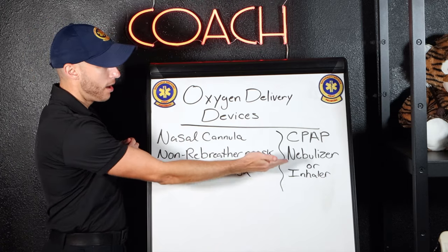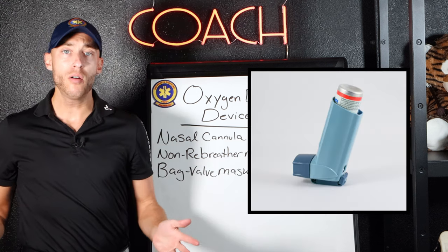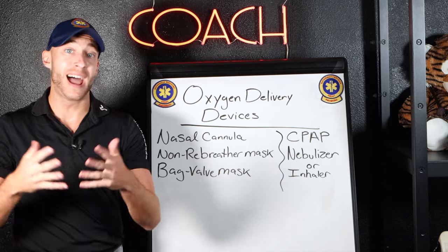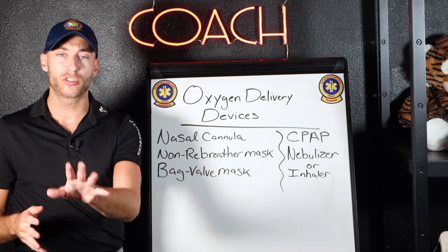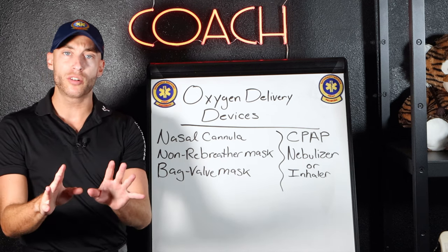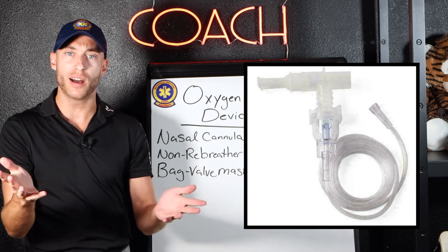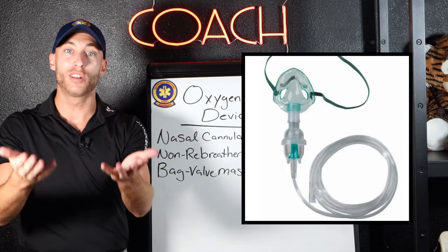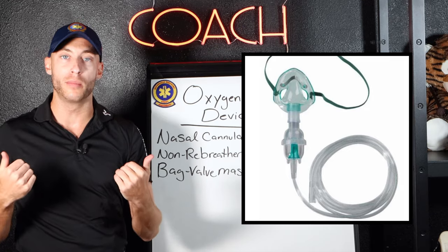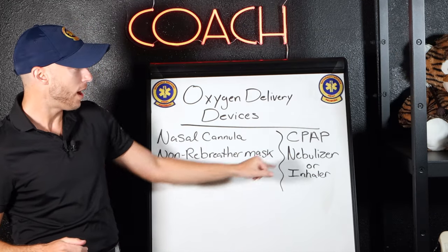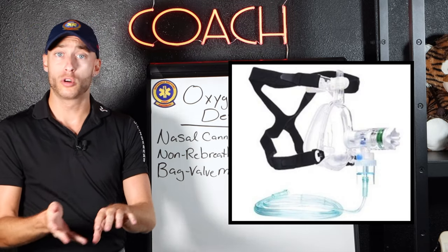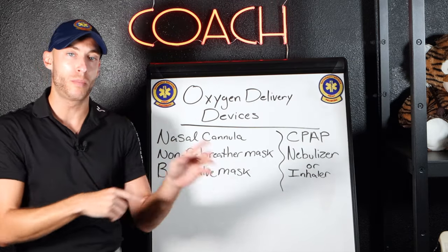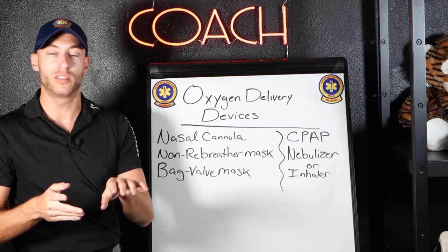We have CPAP, and then we have a nebulizer or an inhaler. An inhaler is something a patient might have in their purse, in their home, in their car — an asthma or COPD patient might carry one. The nebulizer in the ambulance comes in two types: handheld, which the patient can hold themselves, or a mask similar to a non-rebreather with a place to put medications to deliver albuterol, ipratropium, or duoneb to the patient. CPAP can be used for asthma and COPD, but don't forget CHF — people always forget that. Asthma, anaphylaxis, CHF are very common uses.